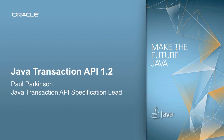Hello, my name is Paul Parkinson. I'm the Java Transaction API Specification Lead for JTA 1.2 — specifically the Maintenance Lead, because JTA 1.2 is a maintenance release of the Java Transaction Specification. I've been working in various transaction processing systems since the early 90s, including mainframes such as IMS and Tuxedo systems and various application servers. For the last 10 years, I've been the transaction processing dev lead at Oracle.